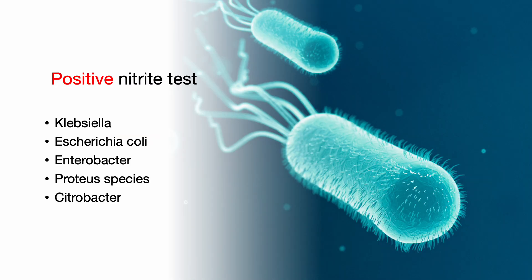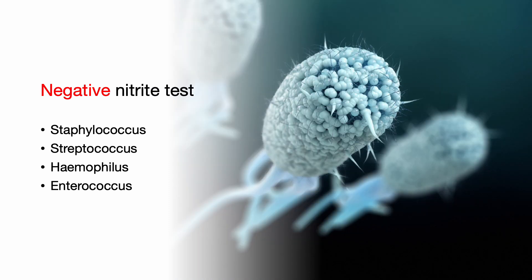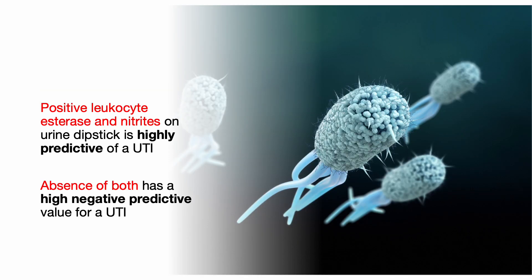A positive nitrite test signifies the presence of gram-negative bacteria capable of converting urinary nitrates to nitrites, such as E. coli, Klebsiella, Enterobacter, Citrobacter, or Proteus. The nitrite test is negative in UTIs caused by non-converting organisms like Enterococcus, Staph, Strep, or Haemophilus. The presence of both leukocyte esterase and nitrites on urine dipstick is highly predictive of a UTI. Conversely, the absence of both has a high negative predictive value for a urinary tract infection.